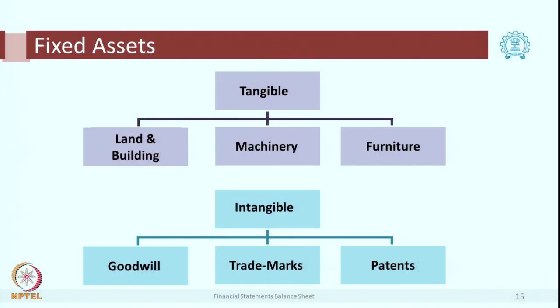So we have got patents, we have got trademarks, we have got goodwill. Now what is goodwill? As the name suggests, it is the good name of the concern. If you are running a shop for many years — 2 years, 3 years, 5 years, 10 years — several people in the locality or even from faraway places will know your shop.